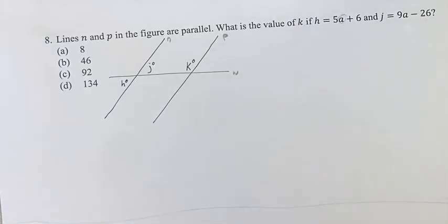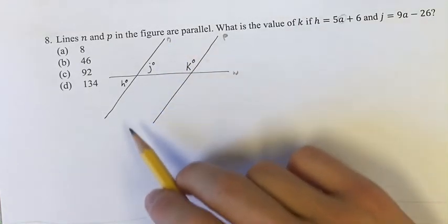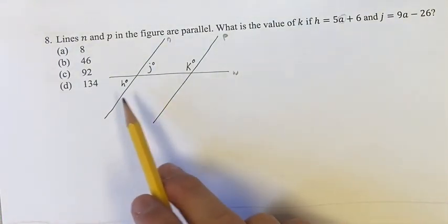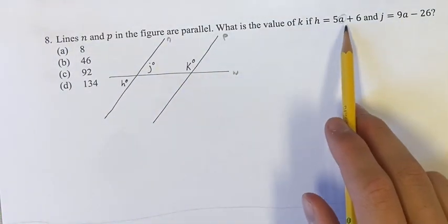Hello and welcome back to another video. In this problem, we have two parallel lines with a line intersecting them. We're looking at these three angles. We're trying to find the value of angle k given the value of h and the value of j in terms of this variable a.